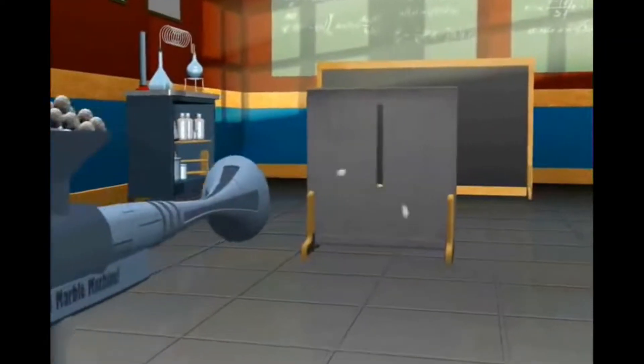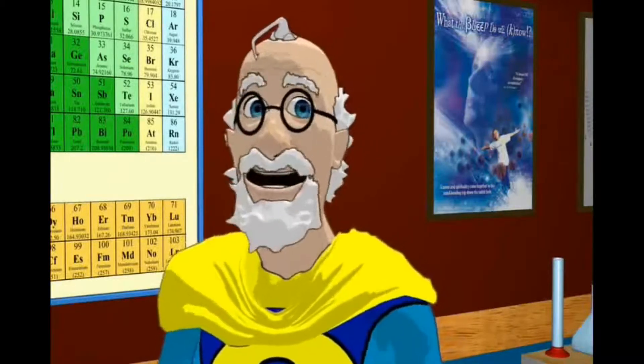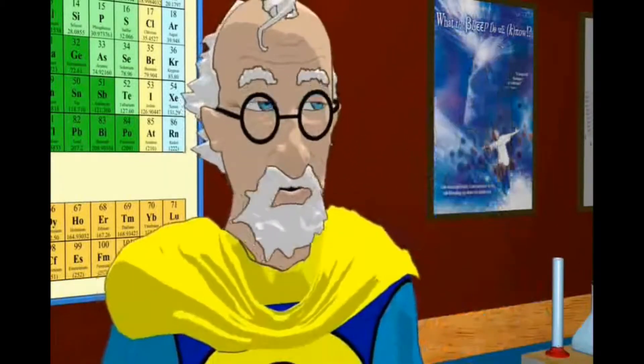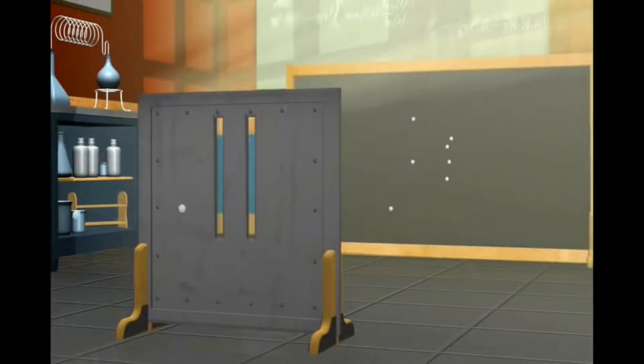If we randomly shoot a small object, say a marble, at the screen, we see a pattern on the back wall where they went through the slit and hit. Now if we add a second slit, we would expect to see a second band duplicated to the right.